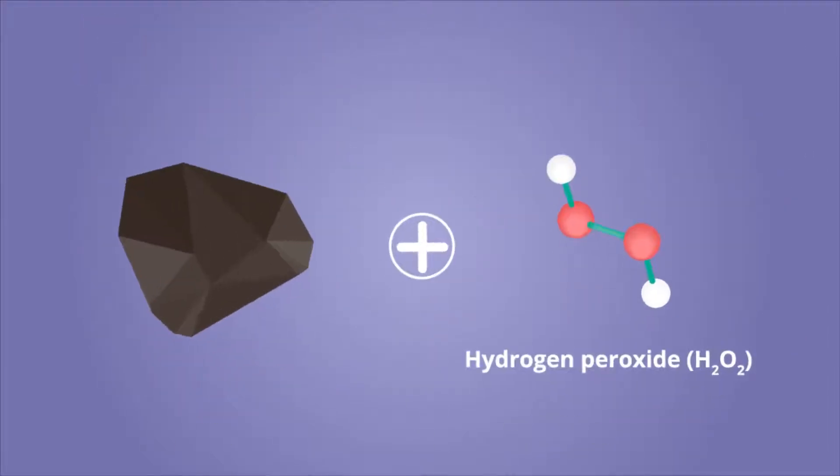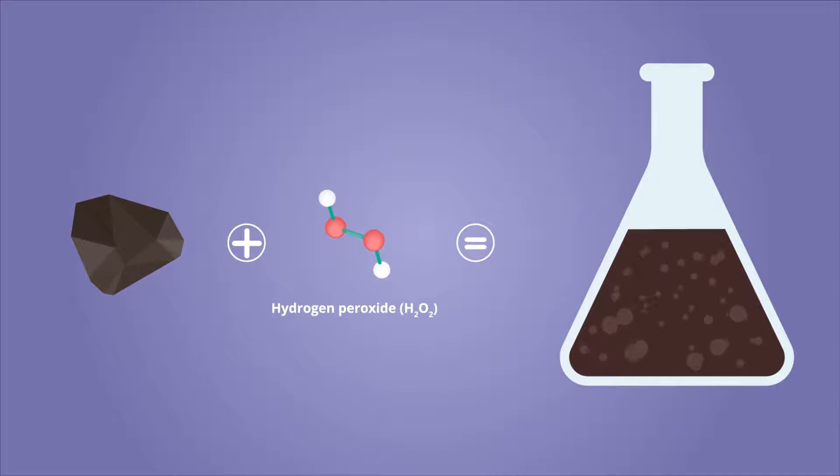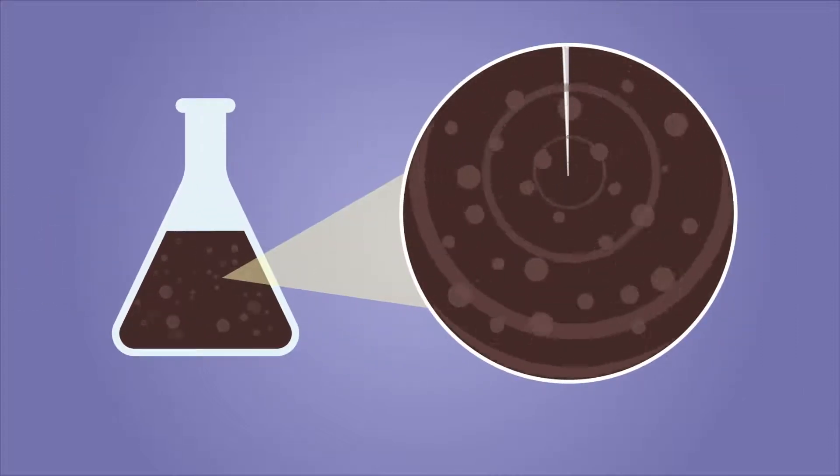In their new method, the research team first mixed samples of coal with an oxidizing agent, hydrogen peroxide. The mixture was then exposed to high-energy ultrasound waves in a process called ultrasonication.